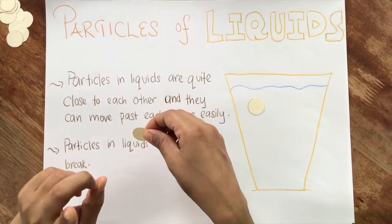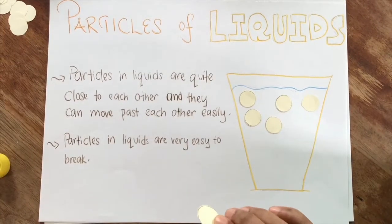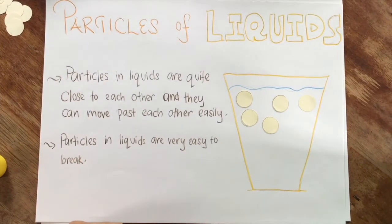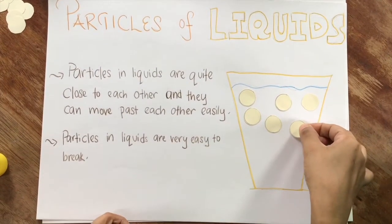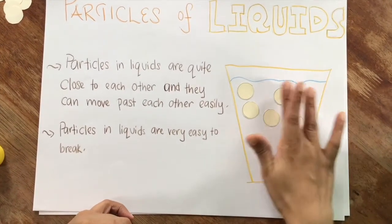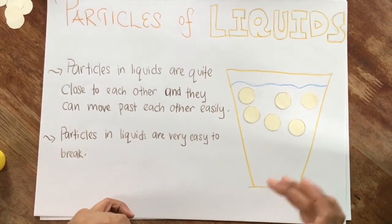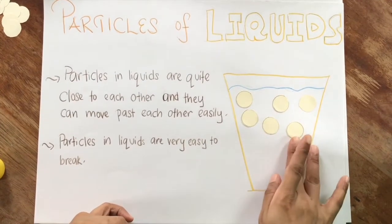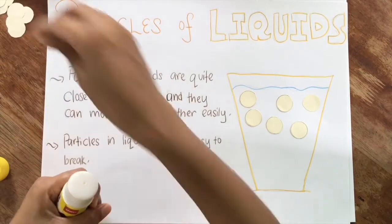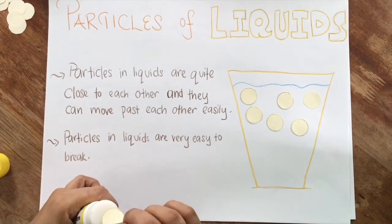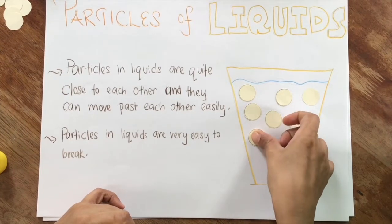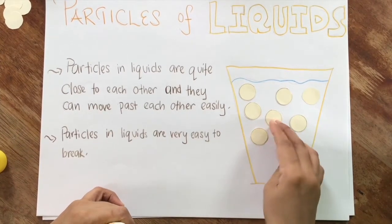Hold on, teacher will show you. Can you see how teacher has arranged some of the liquid particles? Teacher didn't place them close to each other like the ones in solid. They are near to each other but not very near. Why are they not very near? Because liquid particles can move past each other.